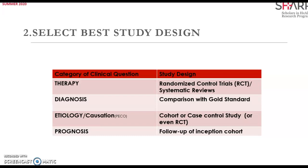Prognosis answers questions about a patient's future health, lifespan, and quality of life, in the event one chooses a particular treatment option. For example, how would the quality of life change for a patient who undergoes surgery for prostate cancer? This is a prognosis question. Each category of clinical question is best answered by a specific study design.